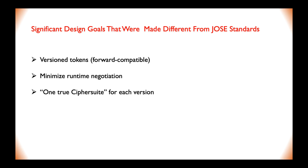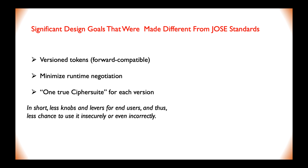These are the significant design goals that make Passera different from the JWT standards. Version tokens are forward compatible, they minimize runtime negotiation, and there is one true cipher suite for each version. In short, fewer knobs and levers for end users, and thus less chance to use it insecurely or incorrectly.